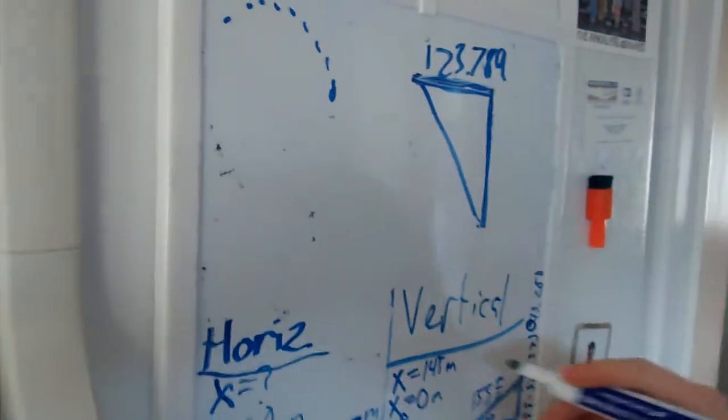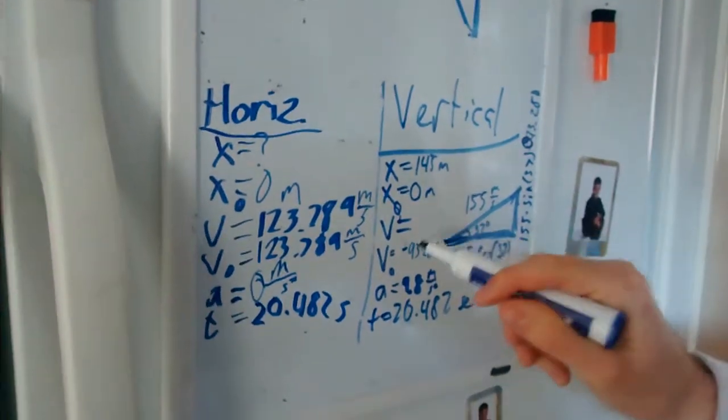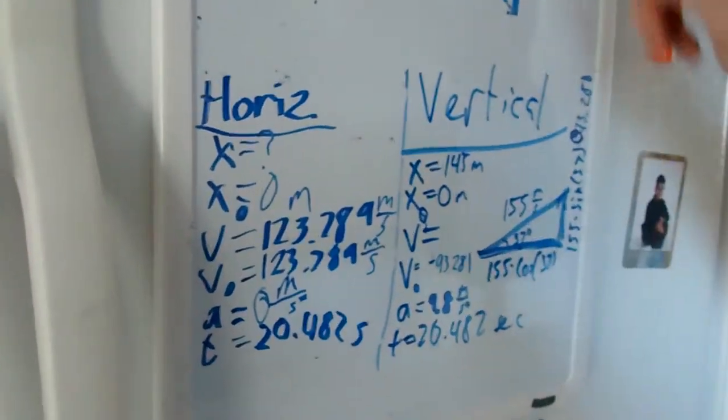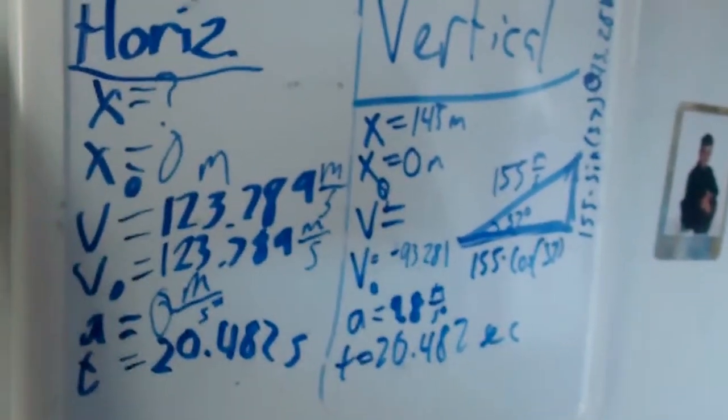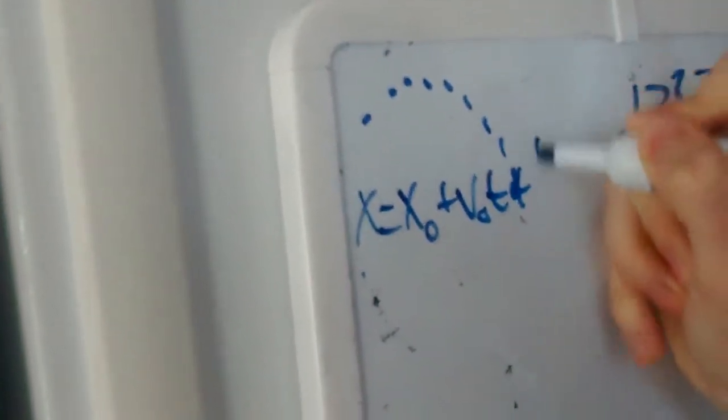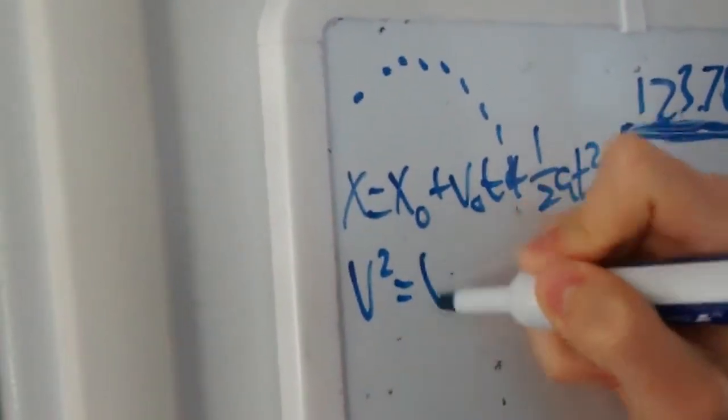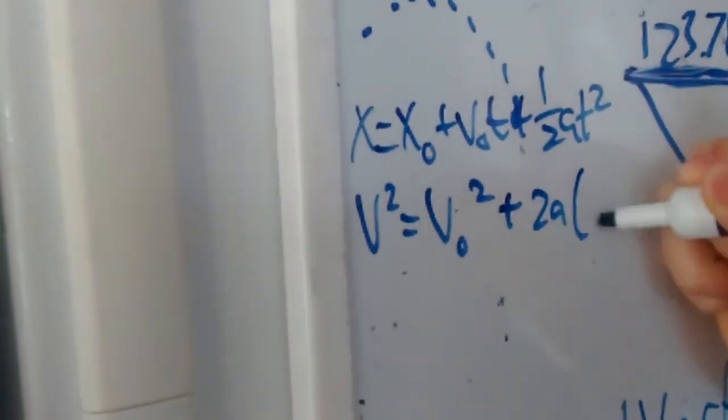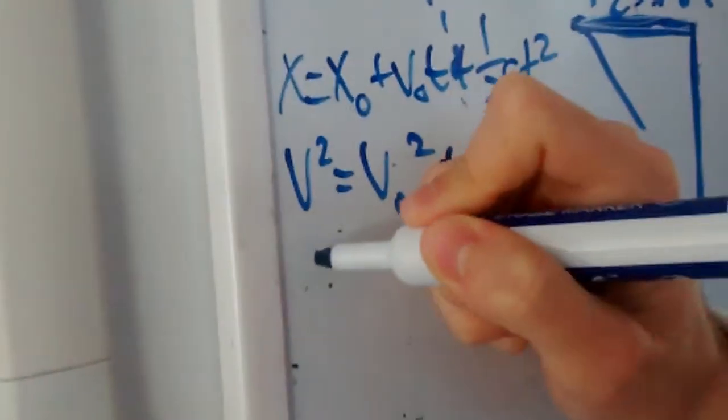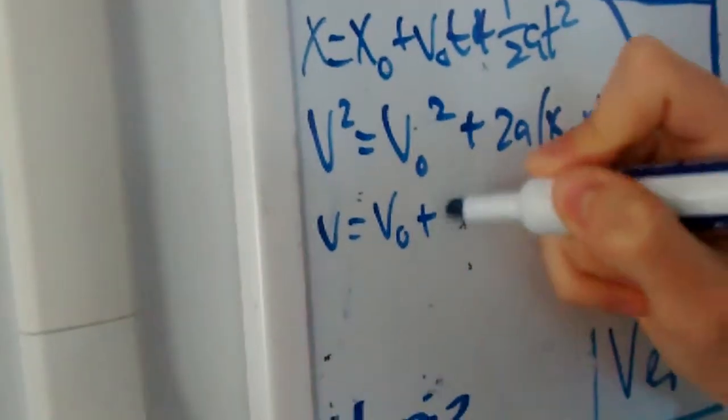So now we need to figure out what this vertical is. And how do we do that? Well, we go back down to the vertical section of our problem. And we see that we have all the values except for V. And we need to solve for that V to figure out the final velocity vertically. So let's rewrite our equations.